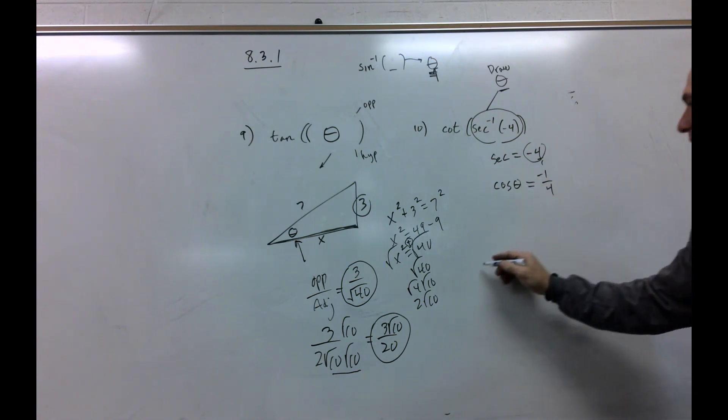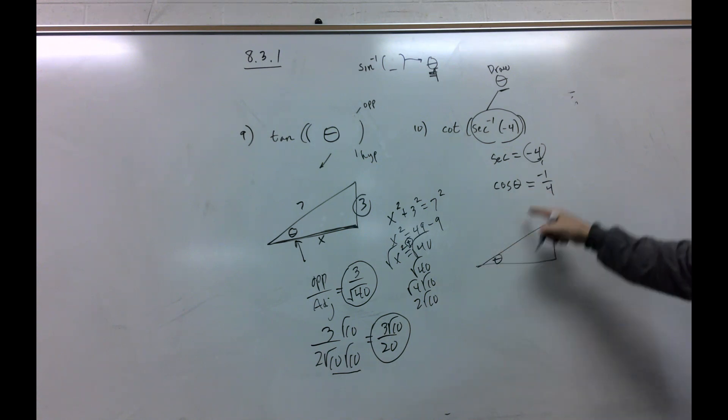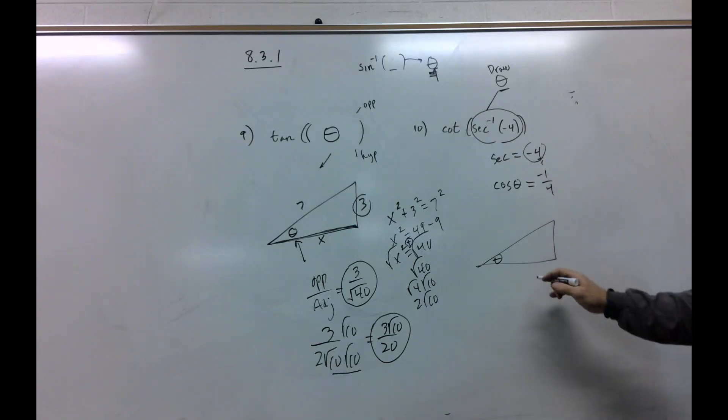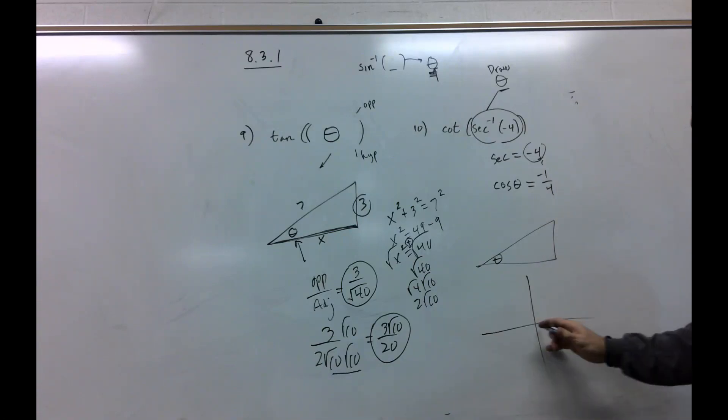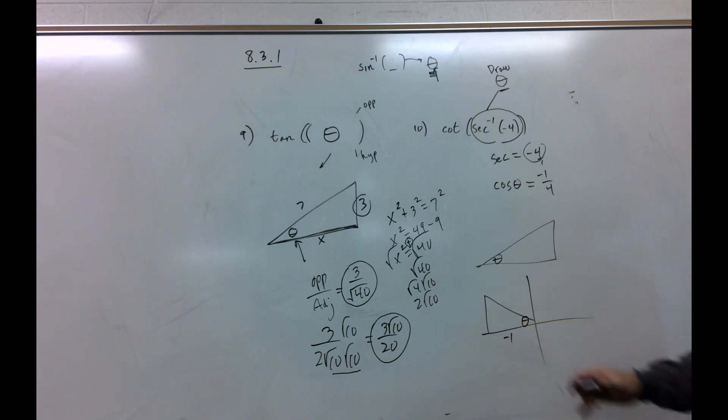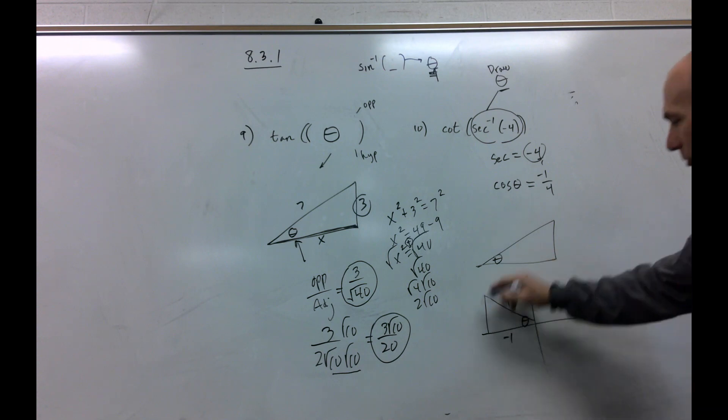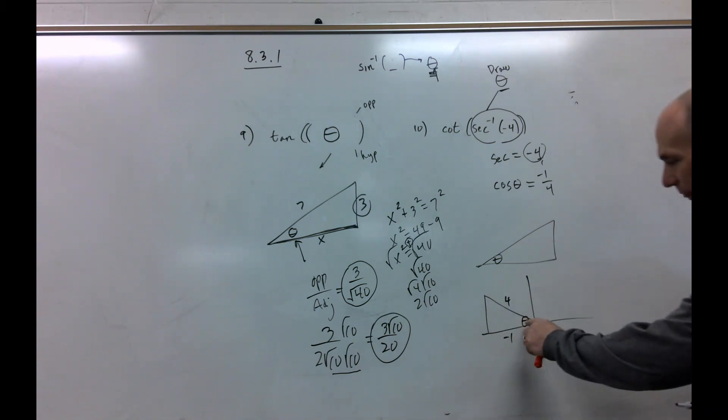So, I'm going to try to draw a drawing where my theta is here. Just bring it here. My adjacent side is negative 1. I better actually draw it like this so you can kind of see what it's talking about. So, my adjacent side is negative 1. My hypotenuse is 4. And now that we've got our drawing,